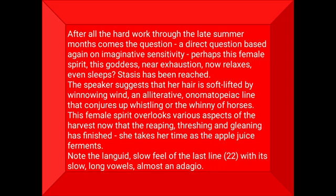After all the hard work through the late summer months comes the cushion — a direct image based on imaginative sensitivity. Perhaps this female spirit, this goddess, near exhaustion, now relaxes and even sleeps. Stasis has been reached. The speaker suggests that her hair is soft-lifted by the winnowing wind, an alliterative, onomatopoeic line that conjures up the whistling or waning of breezes. This female spirit overlooks various aspects of the harvest. Now that the reaping, threshing and gleaning has finished, she takes her time as the apple juice ferments. Note the languid, slow feel of the last line with its slow long vowels, almost an adagio.